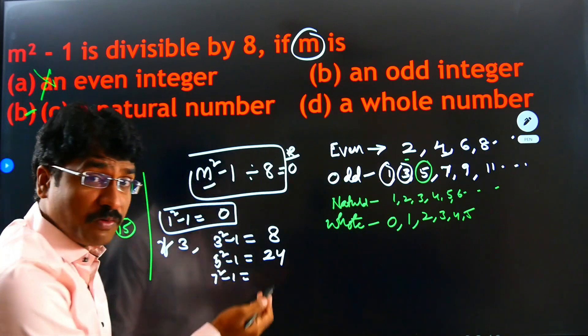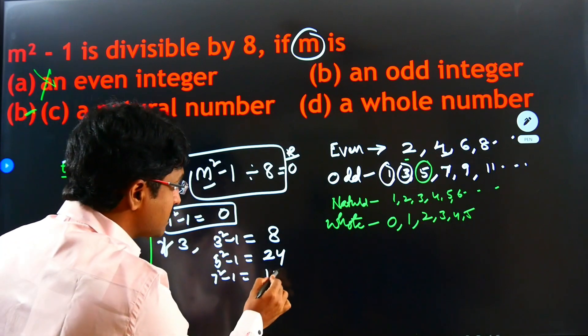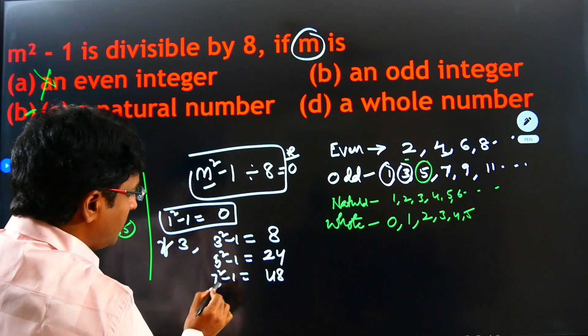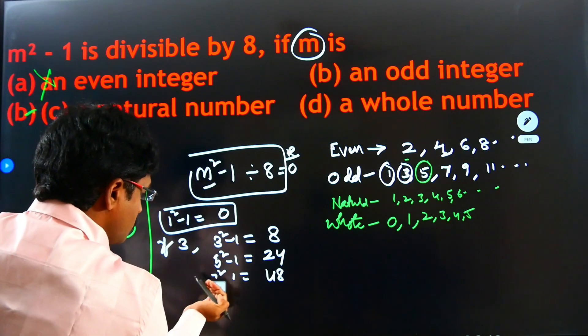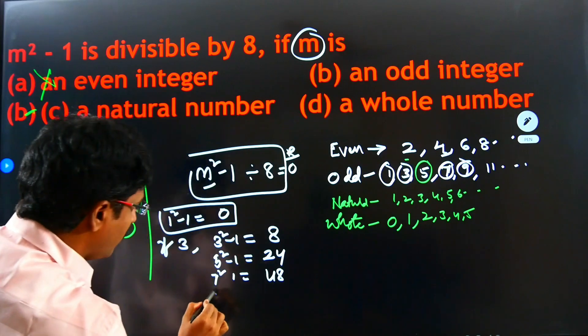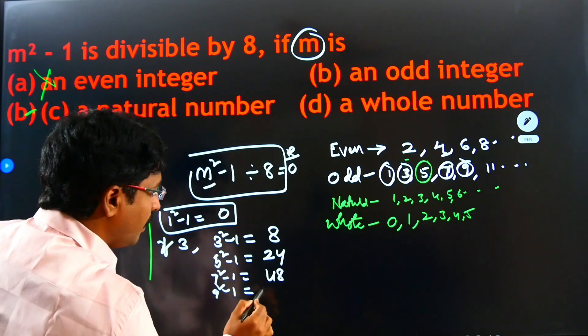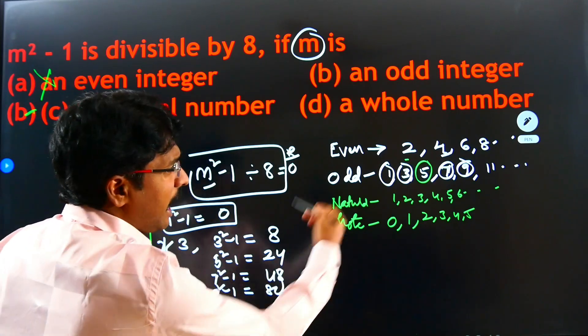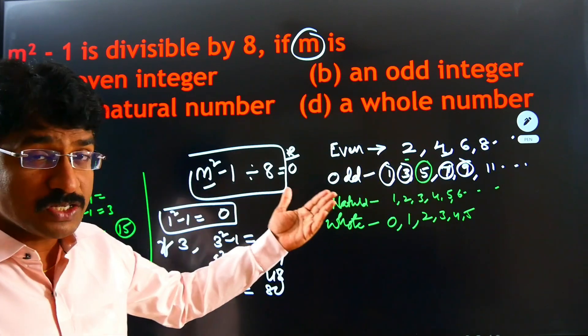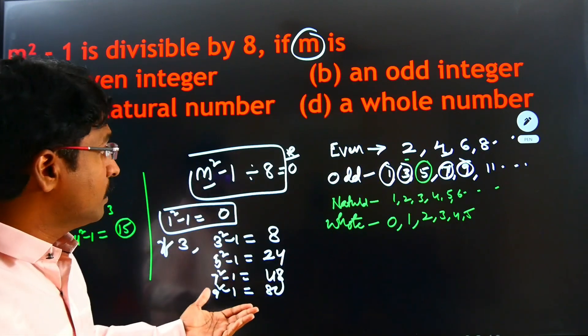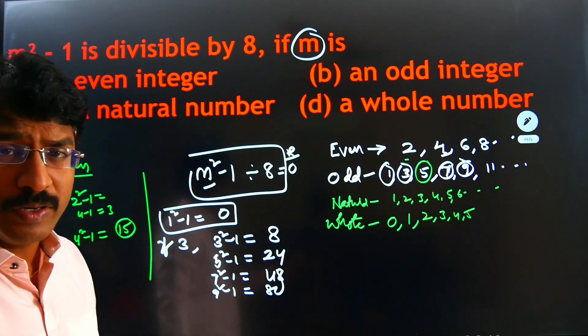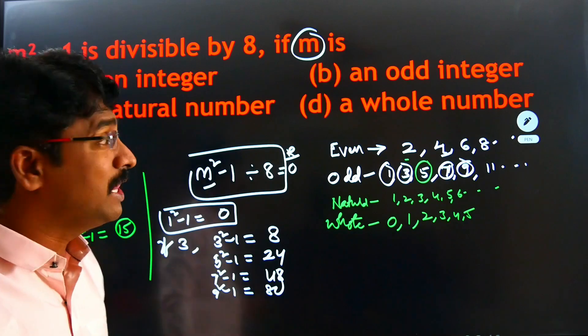Yes. 7 square minus 1. 7 square is 49. 49 minus 1, 48. Yes, 48 also comes in the 8 table. 8 is an even number, so we'll go the next. What is the next odd number? 9. 9 square minus 1. 81 minus 1. That means 80. Yes. Everything is coming. 11 also. 11 square minus 1. 11 square means 121. 121 minus 1, that means 120. 120 also comes in the 8 table.